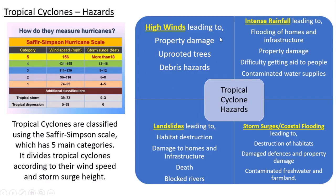General tropical cyclone hazards include: high winds causing lots of property damage, trees uprooted and debris flying around. Intense rainfall occurs causing potential flooding of homes and infrastructure, damage to properties, difficulty getting aid to people, and contaminated water supplies. A storm surge can lead to massive coastal flooding, destroying habitats, properties and land. Landslides can also occur because of the amount of rainfall, damaging homes and infrastructure and leading to death and blocked rivers.